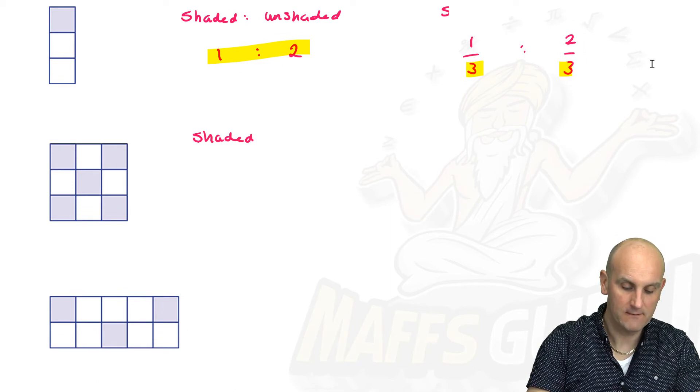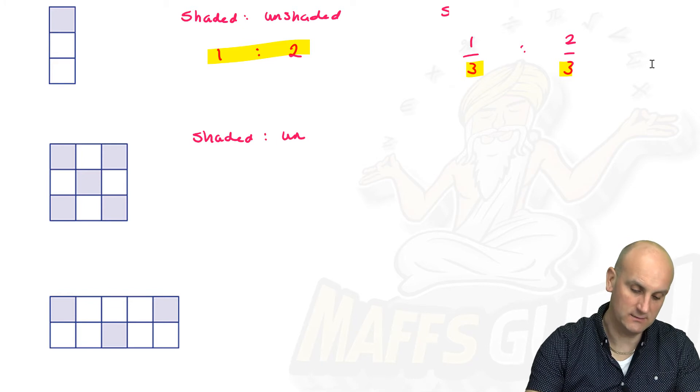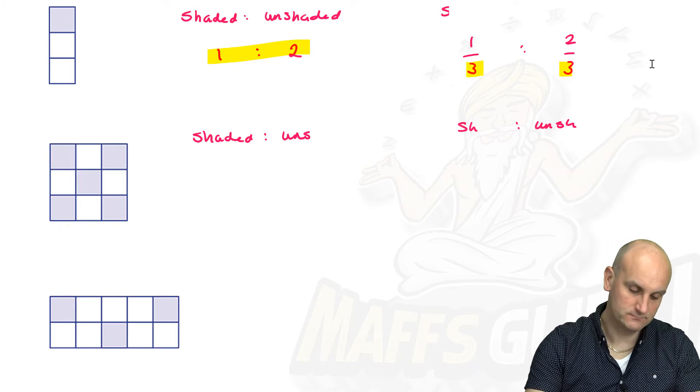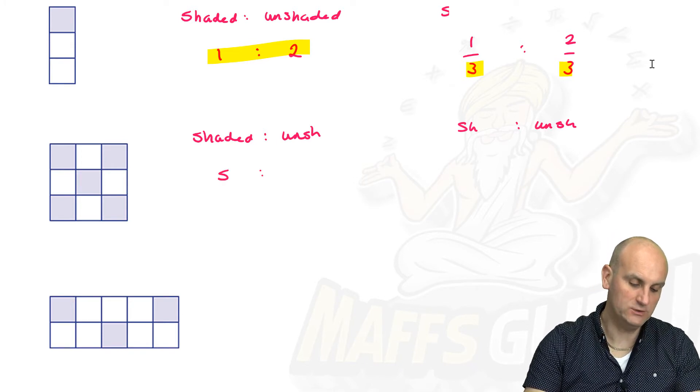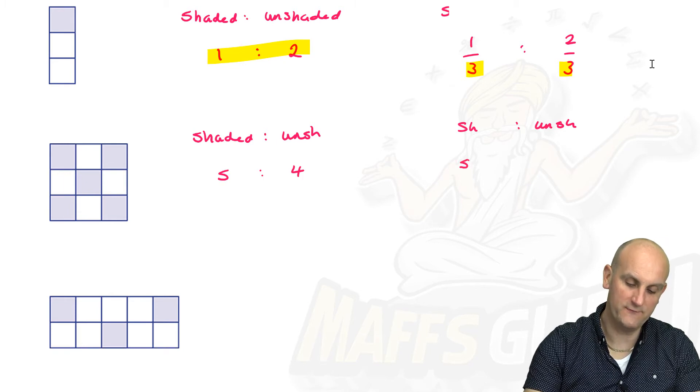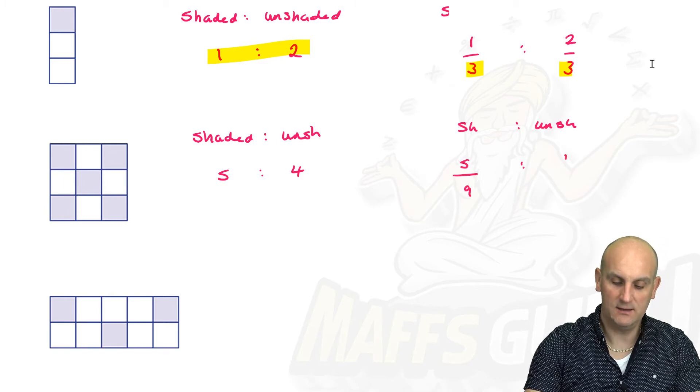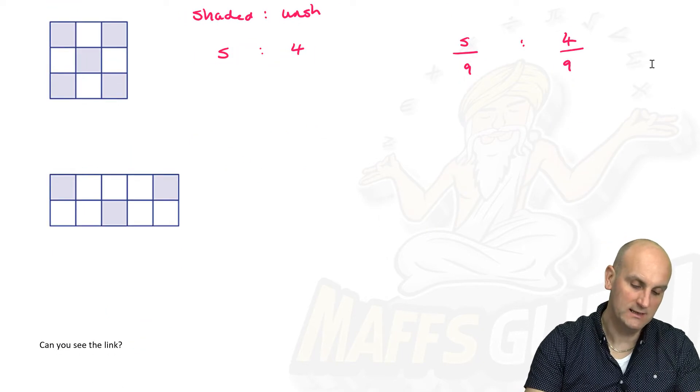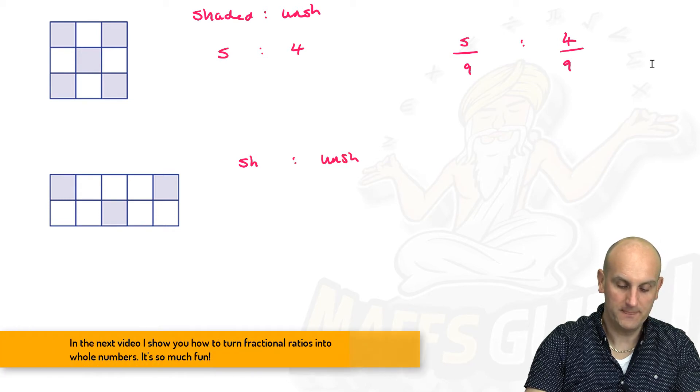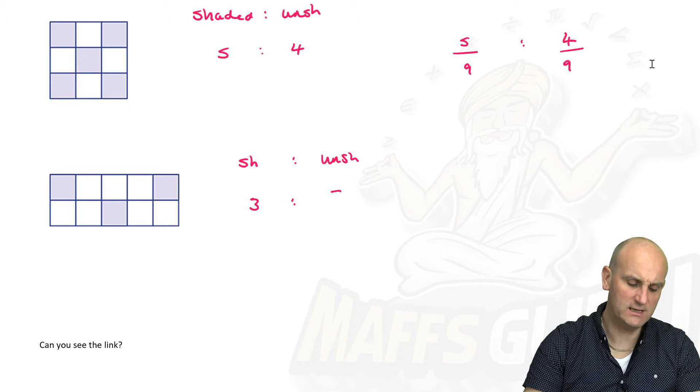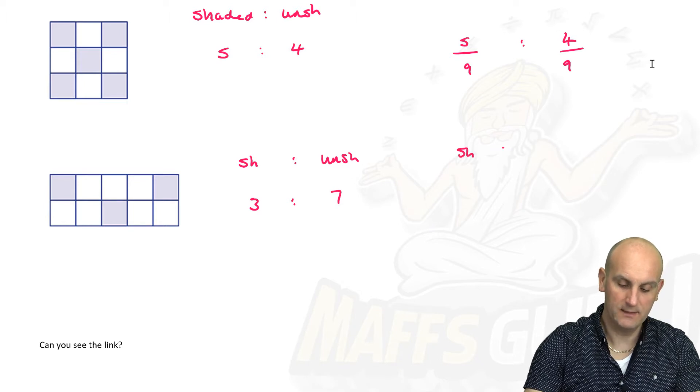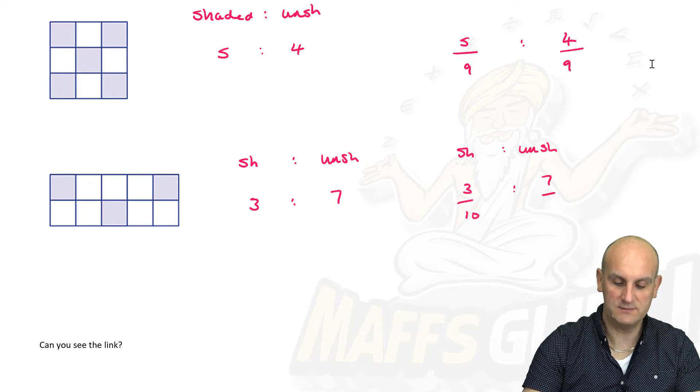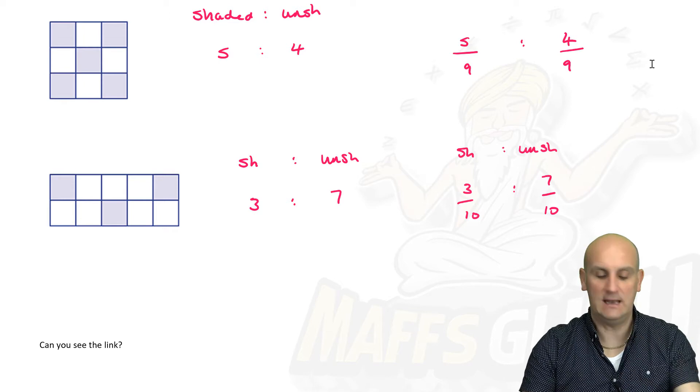So we can actually turn these fractions into ratios because they're realistically the same thing. Let's do it again. Shaded and I'm just going to write 'un' to make it unshaded. Let's do 'sh' to 'unsh' to make it simpler. Shaded: five. Unshaded: four. So that means you've got five ninths shaded and four ninths unshaded. Oh my goodness, this stuff is awesome! Let's do it again. Shaded three, unshaded seven. So that gives me three tenths and seven tenths. We're a gun at this!